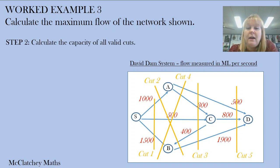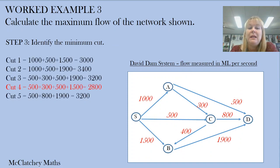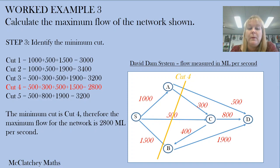Second, we calculate the capacity of the cuts. I've added these up together - you may want to pause and look at where I've calculated these. Be very careful with cut two and cut three, because both pass through that edge C-B that's flowing backwards towards the source. We don't include the 400 in either calculation because we only calculate the capacity going from the inside of the cut to the outside. Then we find the minimum cut, which would be cut four because that's got the smallest capacity. We present our answer in megalitres per second, as given in the question.